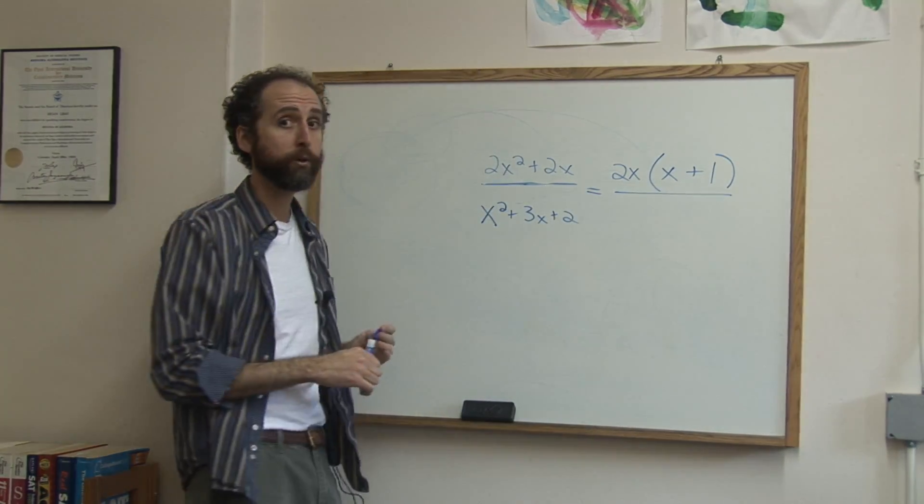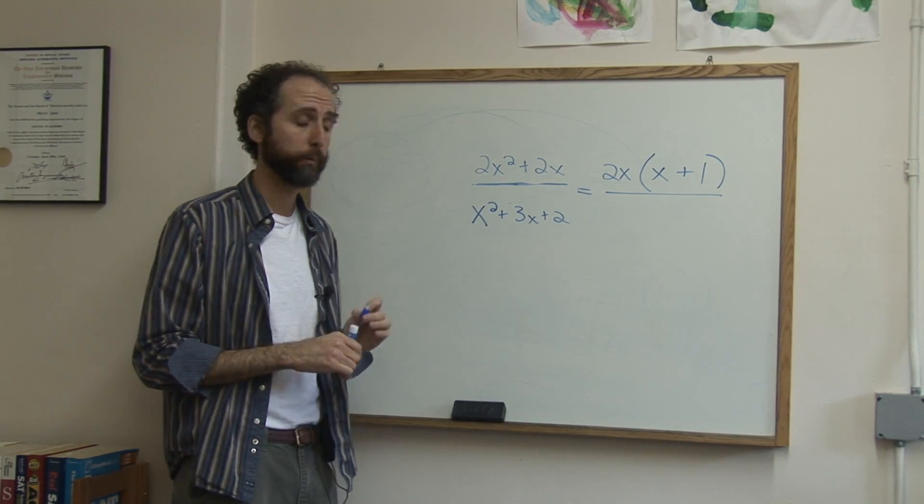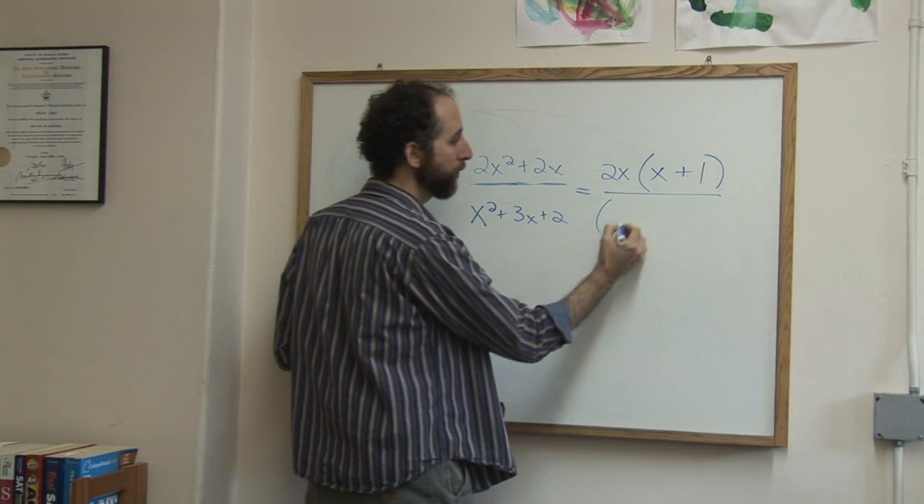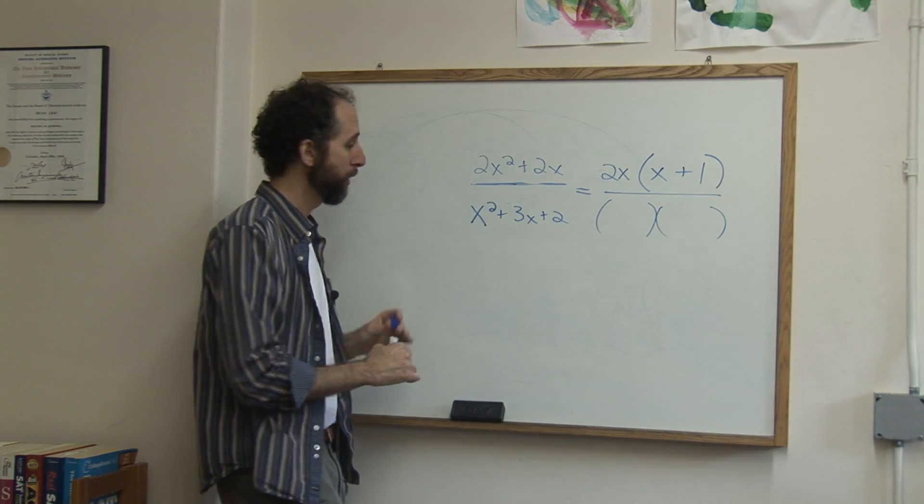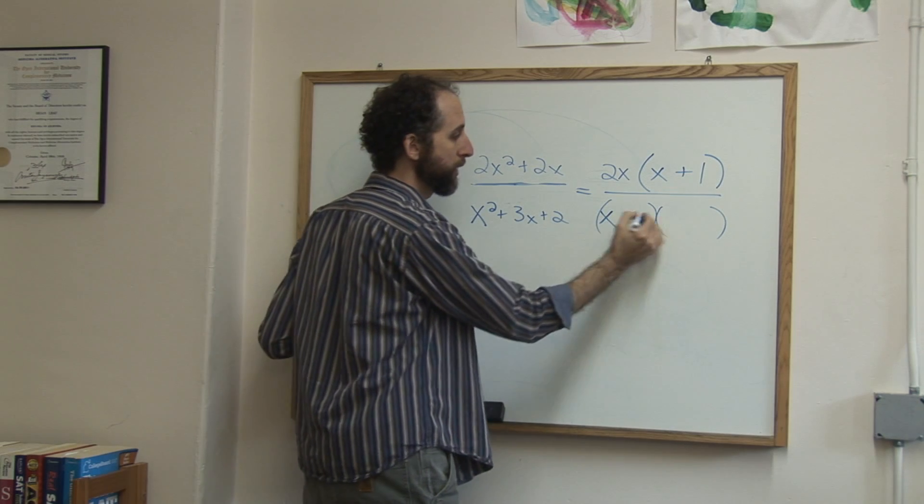Now we're going to factor this guy. This is a trinomial. If you need a review on this, you can check out the clip on factoring trinomials. So to factor this trinomial, you're always going to make two sets of parentheses. Since there's no number in front of the x² term, it's going to be x and x.